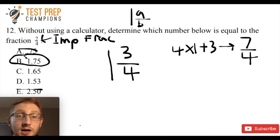But the answer is going to be B, 1.75. So all you had to do here was convert this improper fraction into a mixed number. And then you had to recognize that 3 fourths was equal to 0.75. And you could do that either using your calculator or just by memorization.